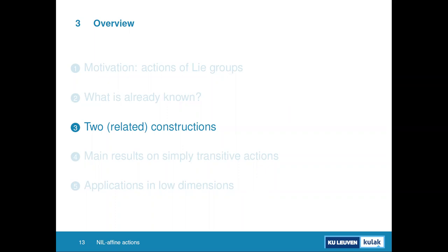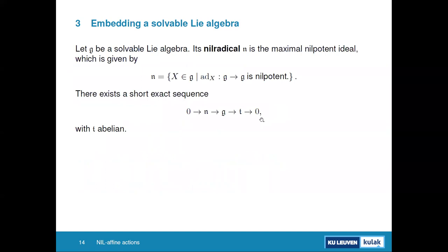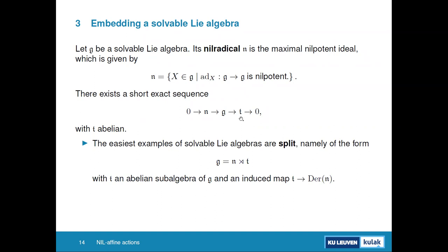Before stating results, I need two constructions for solvable Lie algebras. Starting with a solvable Lie algebra and its nil radical — the maximal nilpotent ideal, consisting of elements where the adjoint map is nilpotent — we have a short exact sequence where the quotient is abelian. In the ideal case this sequence splits, giving a semi-direct product. But not every solvable Lie algebra splits.